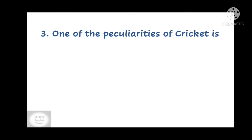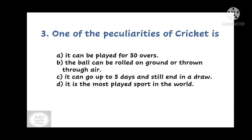Question number 3. One of the peculiarities of cricket — peculiarities means strangeness — is: A. It can be played for 50 overs. B. The ball can be rolled on ground or thrown through air. C. It can go up to 5 days and still end in a draw. Or D. It is the most played sport in the world.